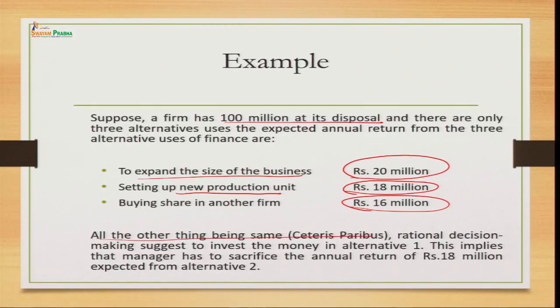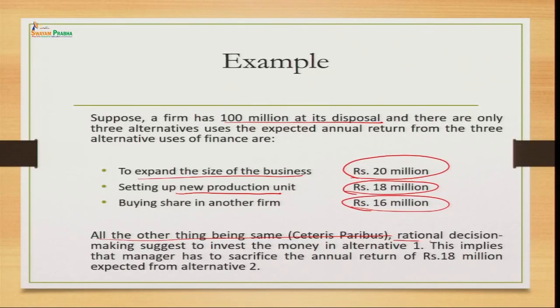All other things being equal — ceteris paribus — since the future is always risky and uncertain, we take this assumption and decide rationally, analyzing the cost and benefit. We will choose the very first alternative because it gives the maximum return compared to the other alternatives available to us.